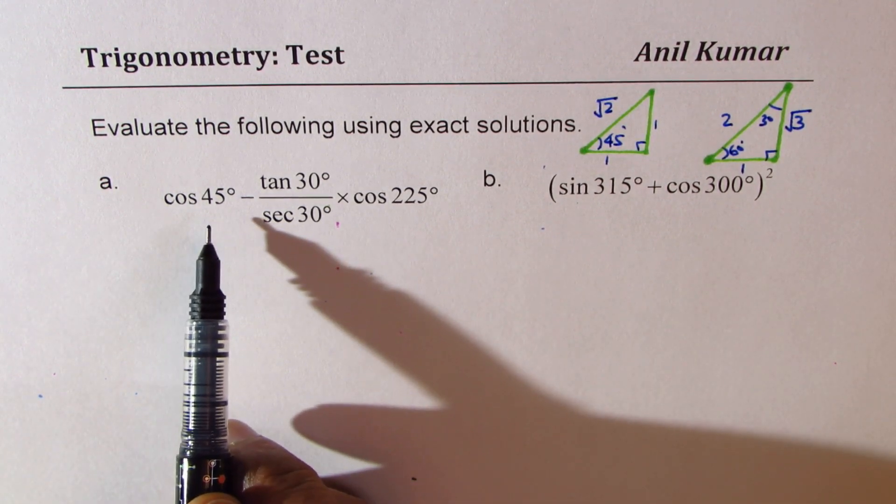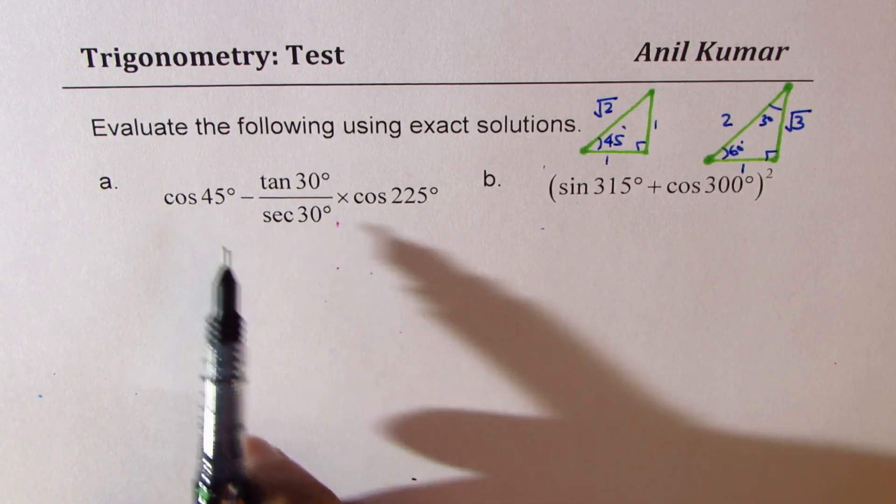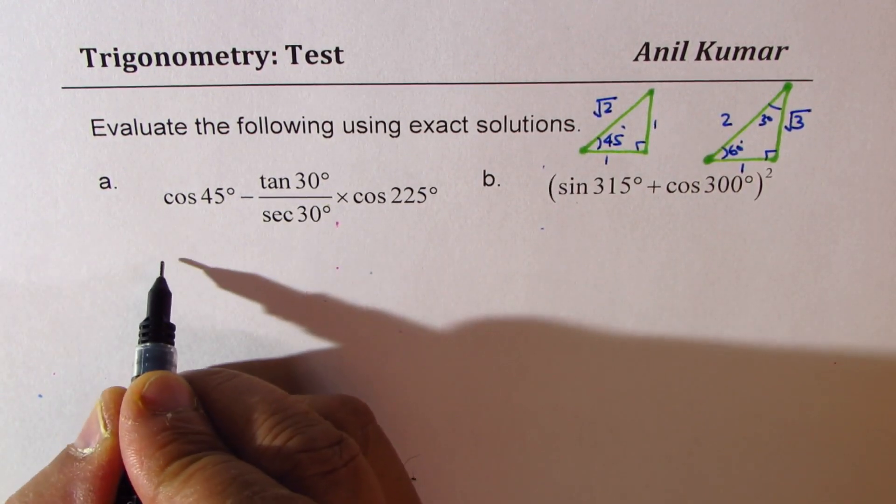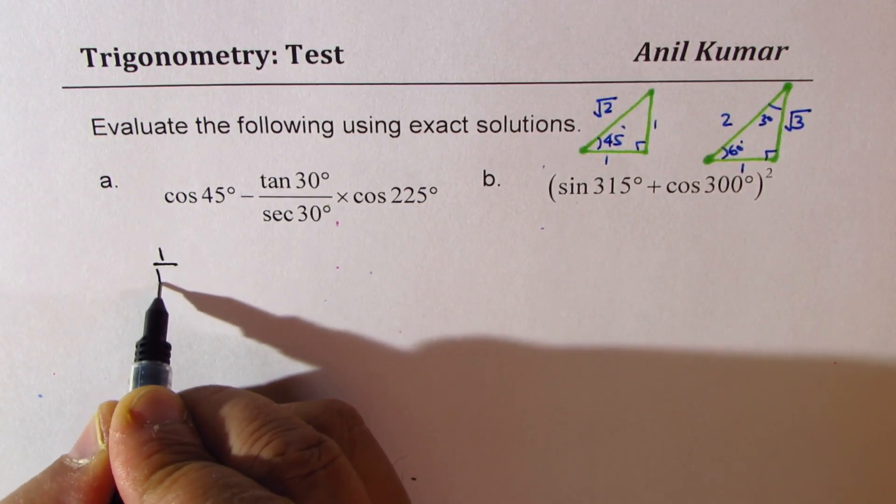We have cos 45 degrees. Cos 45 means 1 over square root 2, so let's write this as 1 over square root 2.